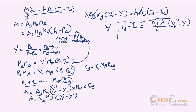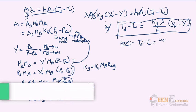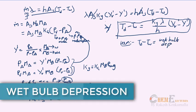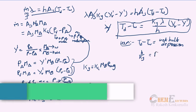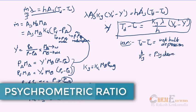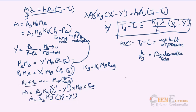Substituting m-dot = As·Ky·(Y'v − Y') into the steady-state equation, with both sides' surface area cancelling, we get: Td − Tw = (Ky·λ / h) × (Y'v − Y'). From this equation I find my wet bulb temperature. Here, Td − Tw is called the wet bulb depression, and h/Ky is called the psychometric ratio. At wet bulb temperature, vapor pressure decreases due to the drop in temperature and partial pressure increases due to evaporation.